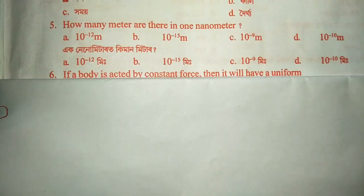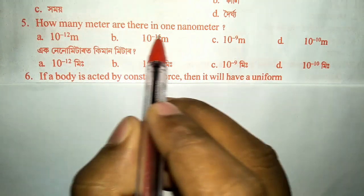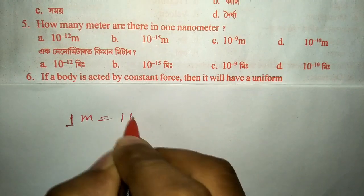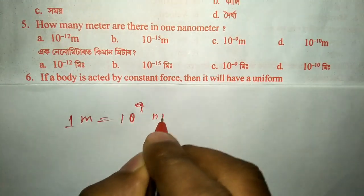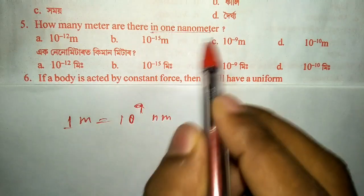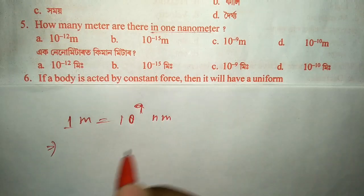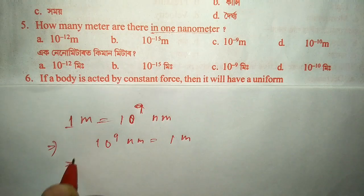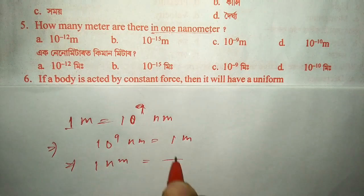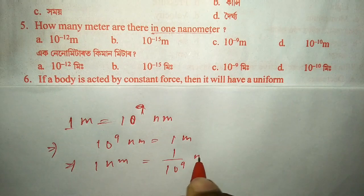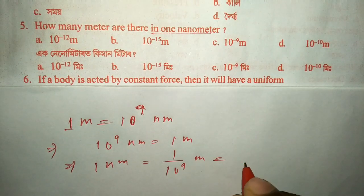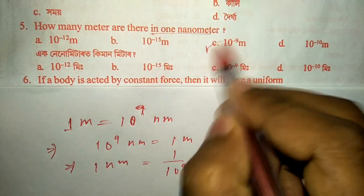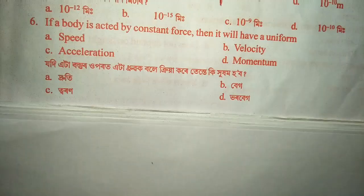Question number five: how many meters are there in one nanometer? We know one meter equals 10 to the power 9 nanometers. Reversing this, one nanometer equals 1 divided by 10 to the power 9 meters, which is 10 to the power minus 9 meters. So option C is the correct answer.